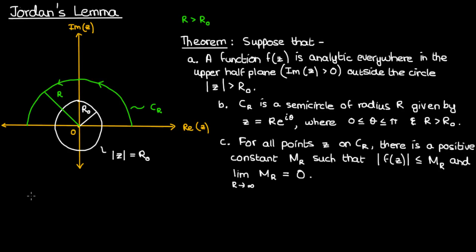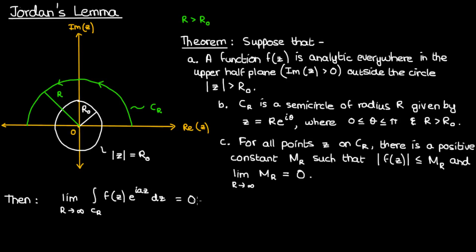If all of these statements apply, then Jordan's lemma says that the contour integral of f times the exponential of iaz over the semicircle in the anti-clockwise direction approaches 0 as capital R approaches infinity. Note that a here is a positive constant.